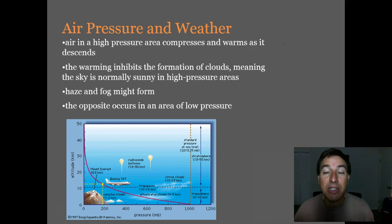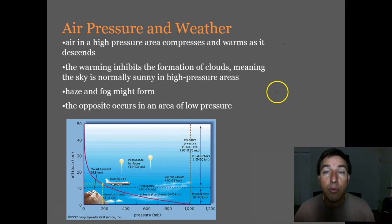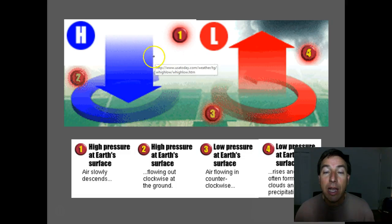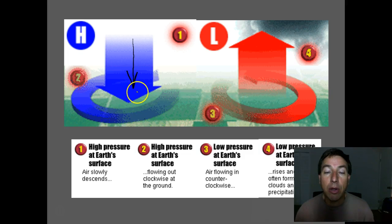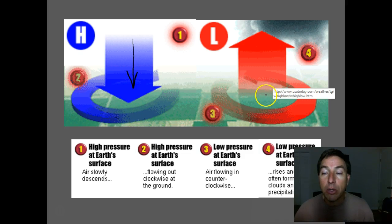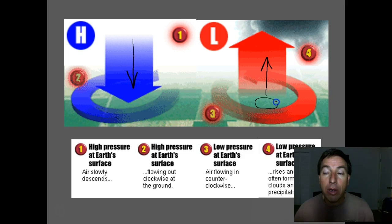Usually high pressure means a sunny area. Here in Florida during the summer, we often have large areas of high pressure that stay over the state and keep cold fronts from the north away — high pressure areas often block low pressure areas. In contrast, low pressure has air moving away from the Earth's surface; it rises and cools, and since that warm air is full of water, when it cools we get rain.